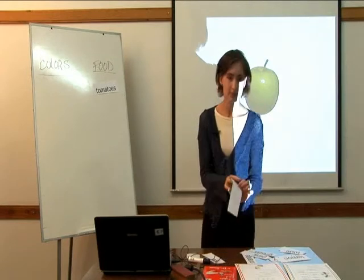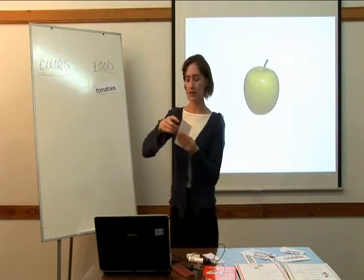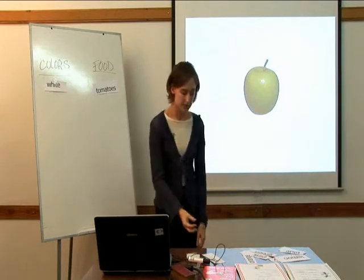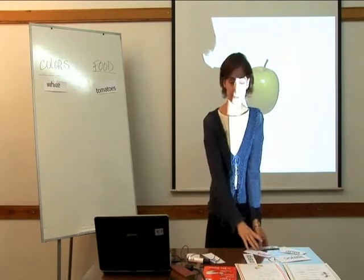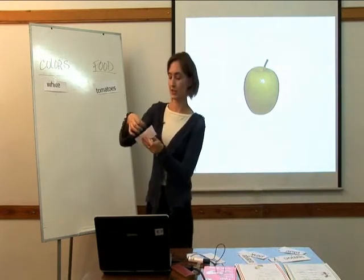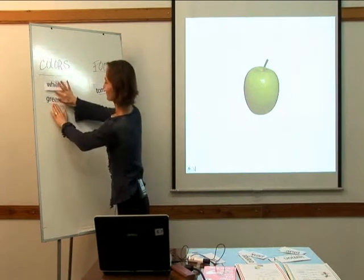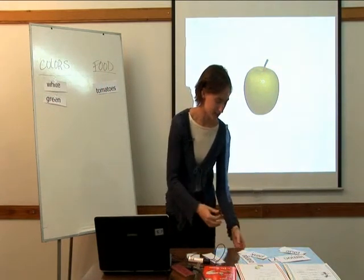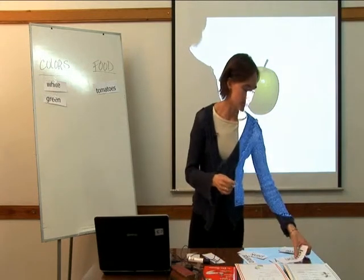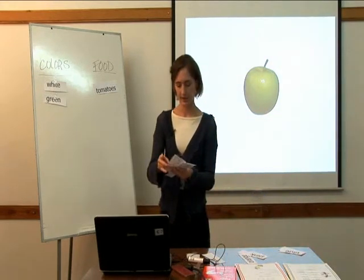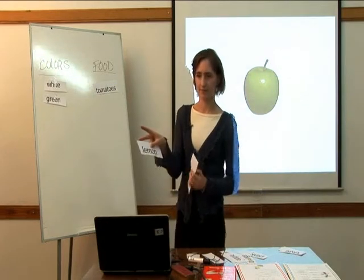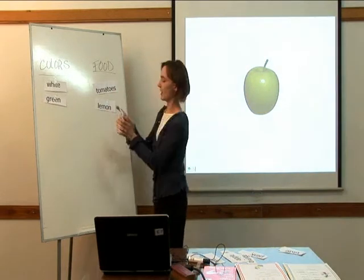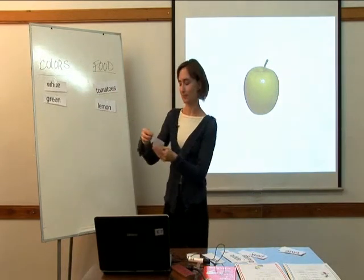Here we have another word — the word white — and students will know this is a color. Continuing, we have the word green, which is also a color. The students would be doing this simultaneously to make the exercise go quicker. We have the word lemon, which can go under the category food. And the word brown — we know it's a color.